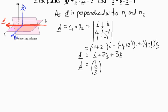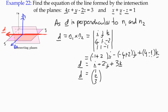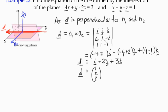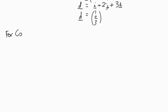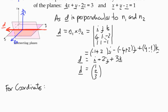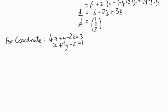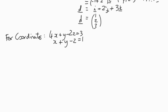Now we need to find a point on the line. If we've got a plane, then we can basically assign some arbitrary value to both of the planes. For the coordinates, we've got the equation of two planes: 4x + y - 2z = 3 and x + y - z = 1.